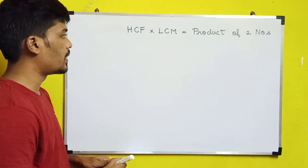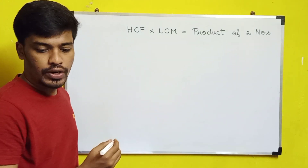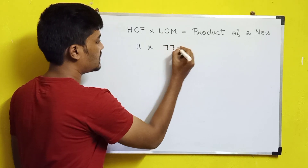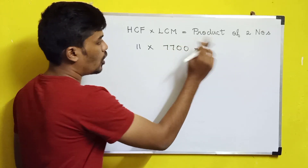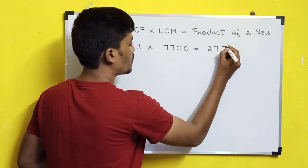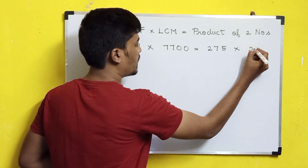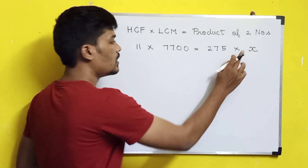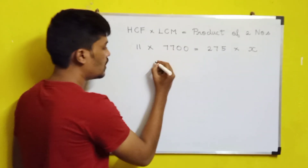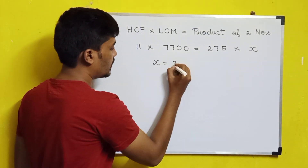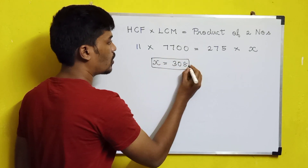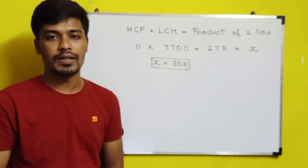So HCF is 11 and LCM is 7700. One number is 275 and the other number is x. Using the formula: 11 × 7700 = 275 × x. Solving for x gives 308. So the other number is 308.